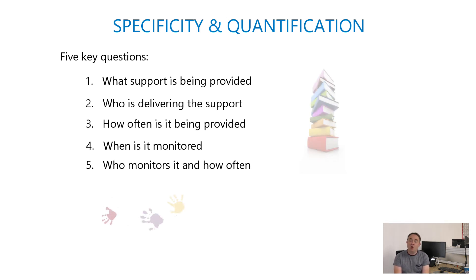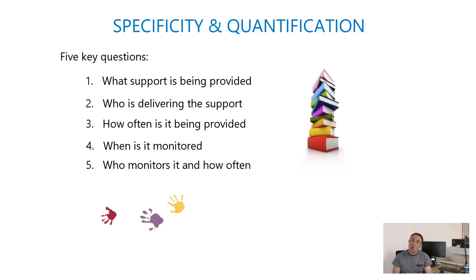It's worth thinking about some golden rules for making EHC plans more specific and quantified. For me there are five key questions you need to focus on: number one, what support is being provided or proposed? Who is delivering the support? How often is it going to be provided? When is it going to be monitored, and who monitors it, and how often? It's the who, what, how, when, and who monitors — and it's important that those questions are asked when you get your draft plan, because answering them all will lead to more specificity.